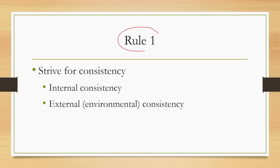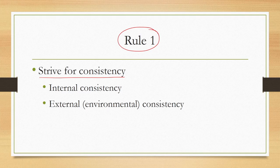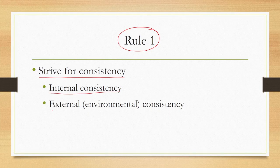Rule number 1: the first golden rule says that we should strive for consistency. There are two types of consistencies from the point of view of this rule — one is internal consistency, the other is external or environmental consistency. What this golden rule tells us is that when we are trying to design an interface, we should strive for both internal as well as external consistency.